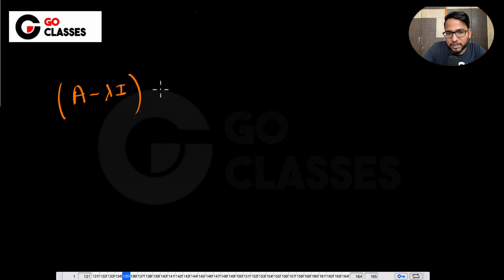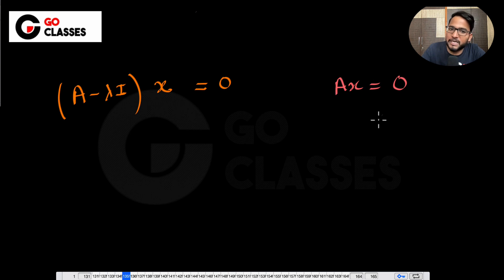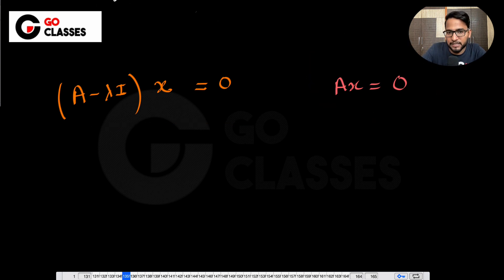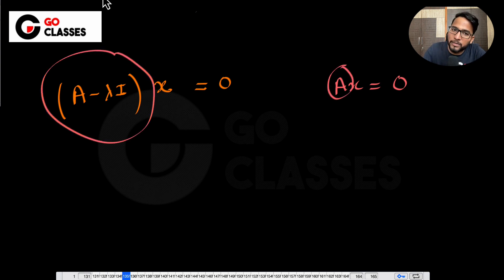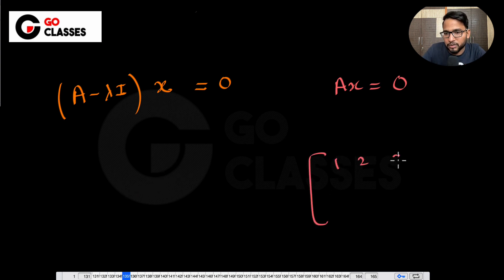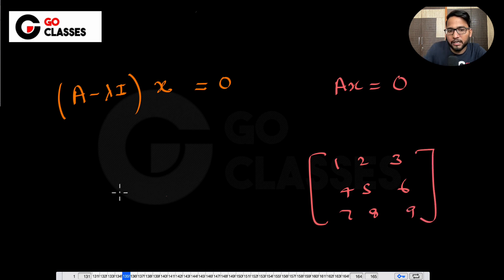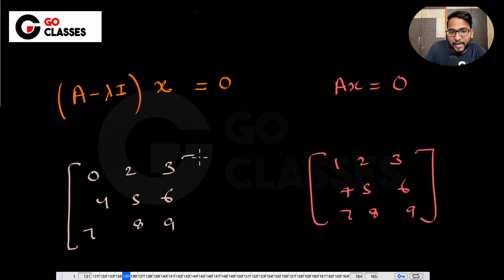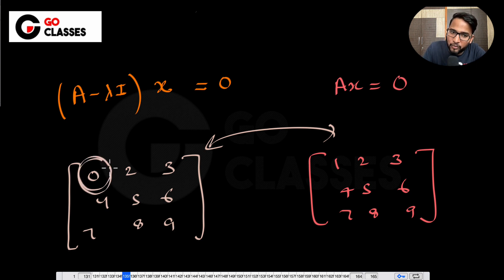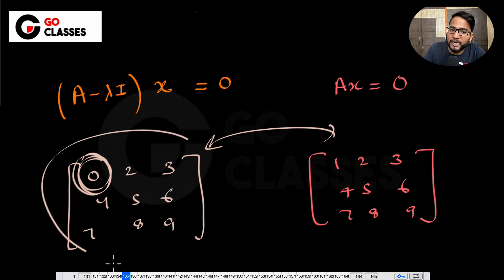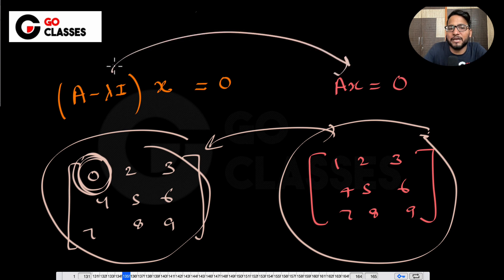In eigenvalue-eigenvector problems, we solve a homogeneous equation to find the eigenvector. We solve (A - λI)x = 0. We also know the homogeneous equation Ax = 0. These are completely different sets of equations — A and (A - λI) are completely different matrices, even if they differ by just one entry. So don't try to relate A and (A - λI).